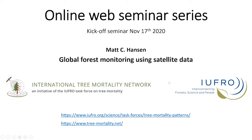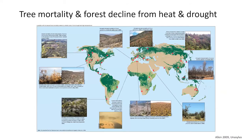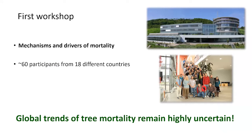Before we start this seminar series, a few words about who we are and how this came to life. For many of us, this is how it started: Craig Allen's publication in 2009 showing tree mortality and forest decline from heat and drought, basically on all forested biomes. We had many questions about whether these events are representative for what's going on across the globe as a whole. In 2014, I organized a workshop in China at the Max Planck Institute for Biogeochemistry, thinking about the mechanisms and drivers of mortality, with 60 participants from 18 different countries.